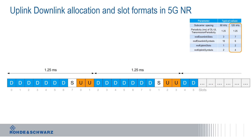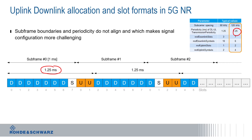Let's take this configuration for 120 kHz subcarrier spacing and translate it into a signal configuration. The periodicity is 1.25 milliseconds, and a slot length for 120 kHz is 0.125 milliseconds, so we need 10 slots. However, the subframe in 5G NR is defined as one millisecond, meaning the TDD downlink/uplink configuration periodicity and the subframe duration are not aligned. This makes it more challenging to configure a signal on a signal generator to test an RF component like a power amplifier that supports TDD.